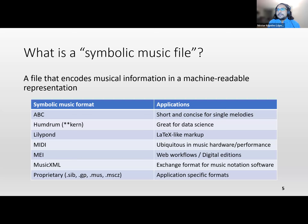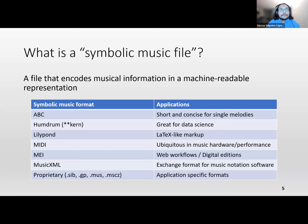One of them is ABC, and one advantage of ABC is that it's really concise, though it only works for monophonic, single-voice music. Then there's Humdrum, which is great for data science — it was developed for that purpose since the nineties. There are still large datasets of music in that format, very popular especially among people in the classical music analysis world.